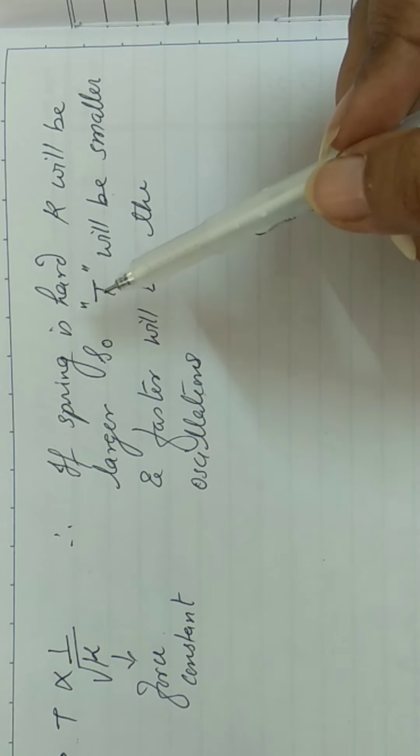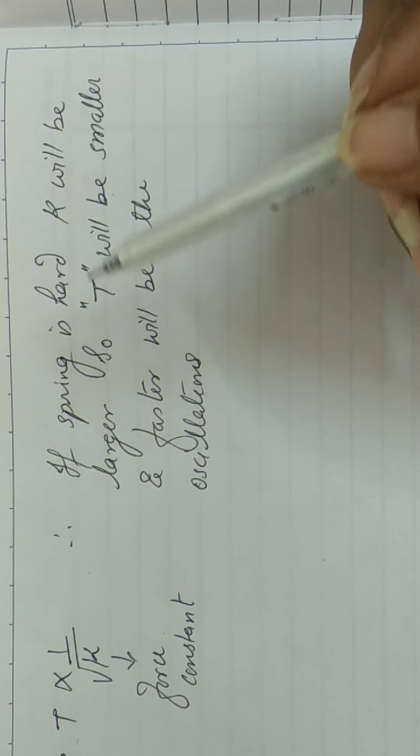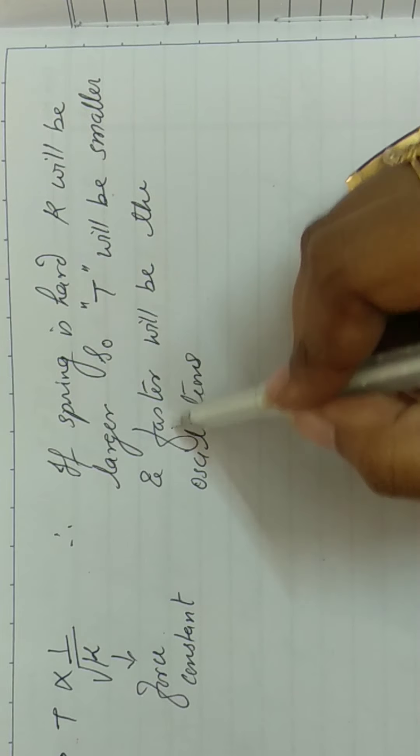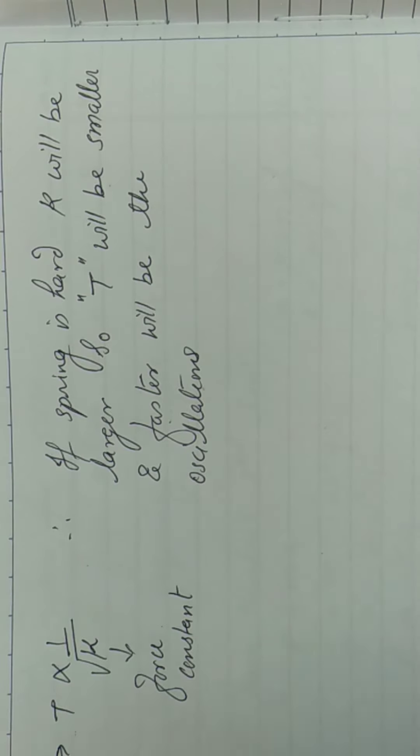So if periodic time is very small, toh ek oscillation complete karne ka jo time hai, woh bhohut hi kam hoota hai. Or agar ek oscillation complete karne ka time kam hooga, toh hume woh oscillations kaise dikhenge, bhohut hi fast dikhenge.